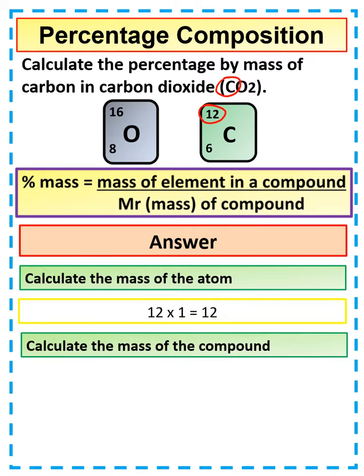We then need to work out the total mass of the compound. We've got two lots of oxygen, so that's 16 times 2, plus one lot of carbon, so that's plus 12. That gives us a mass of 44.